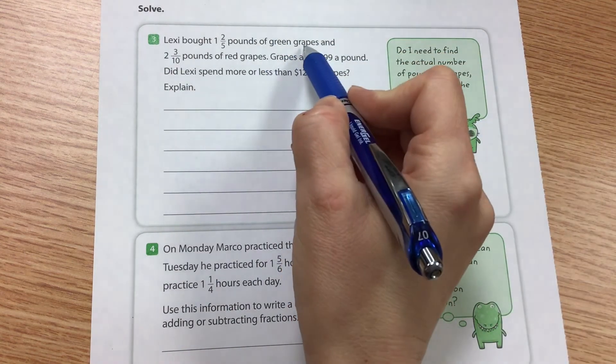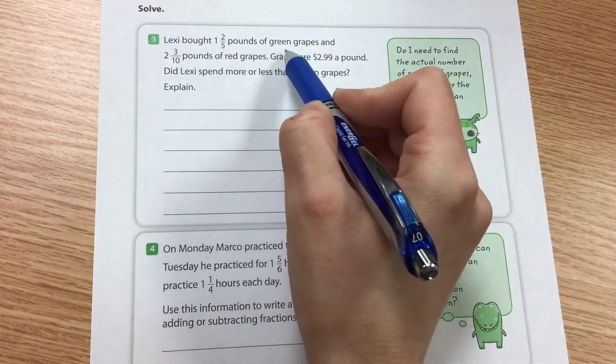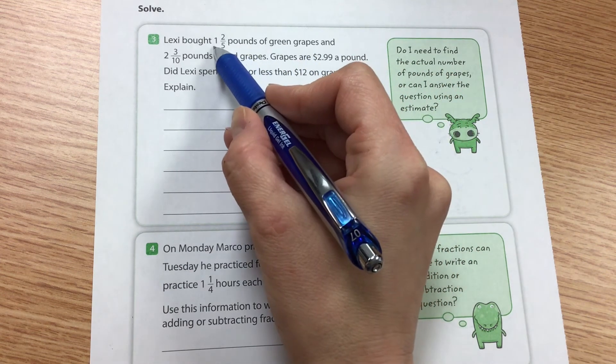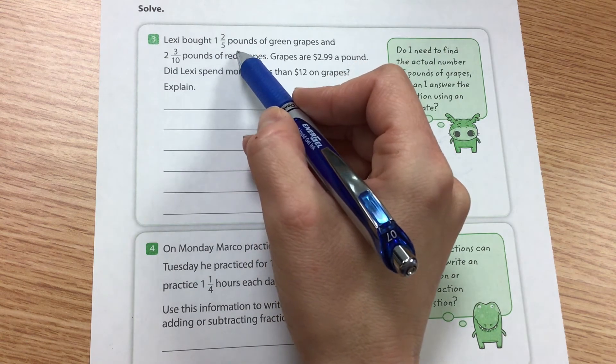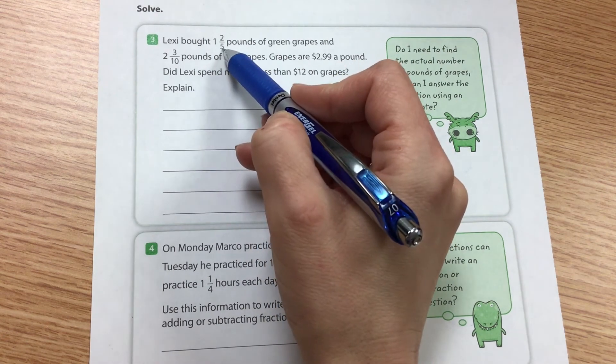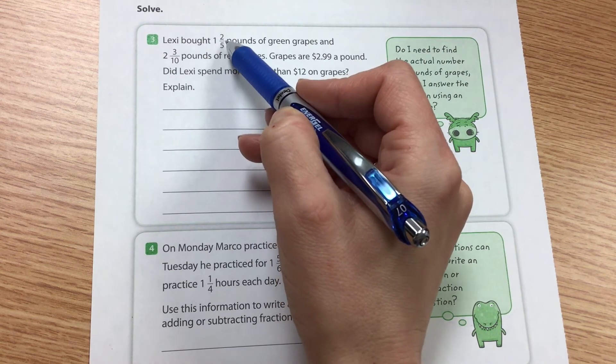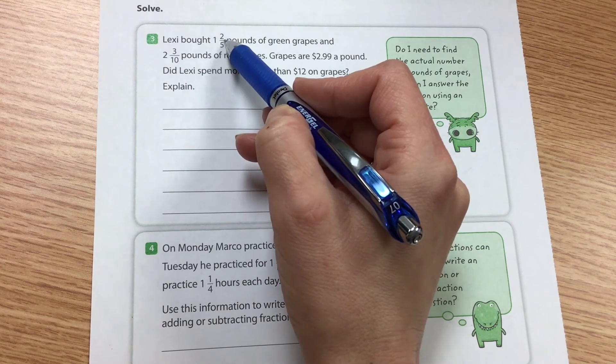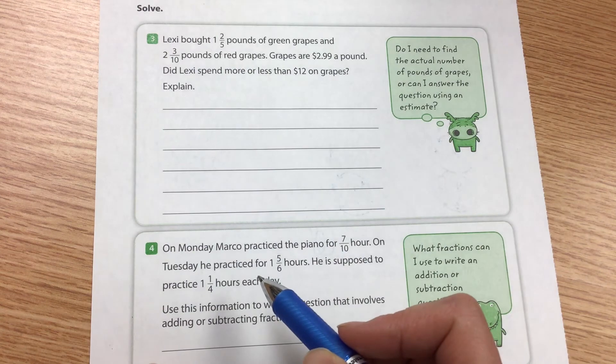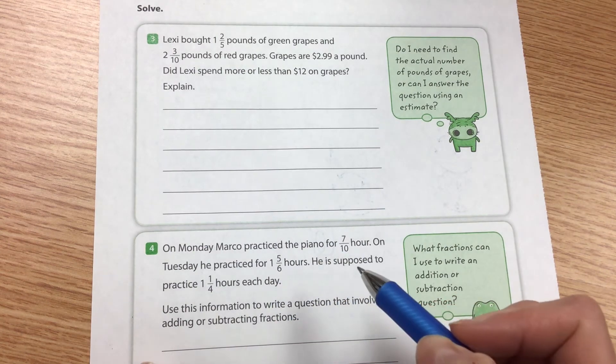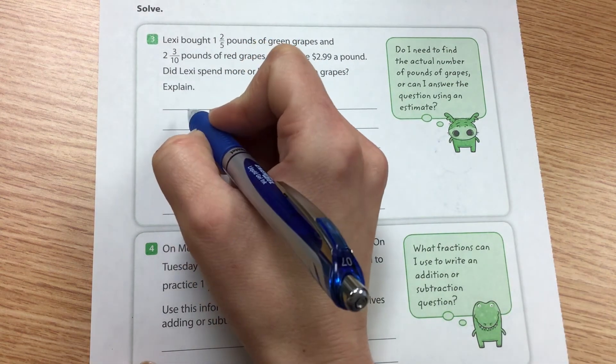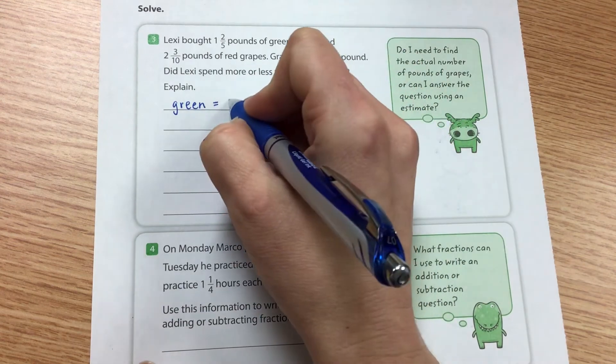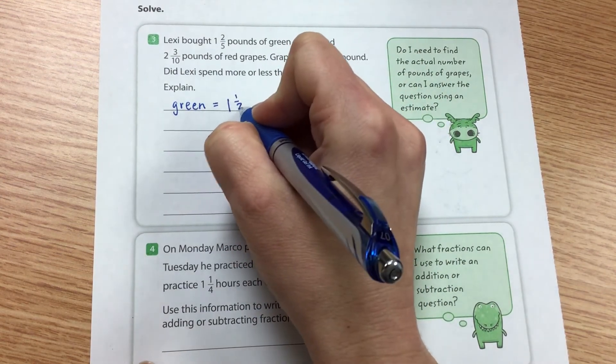Okay, so I'm looking at the green grapes and it says one and two-fifths pounds of green grapes. So I could either say that this is closer to one or one and a half using our benchmark fractions. And I know that half of five is two and a half because if I take five and I divide it, five divided by two is two and a half. So it's just slightly less than half. So I'm going to still say, even if we round it up a little bit, that the green grapes would be maybe close to one and a half, but it's a little bit less.